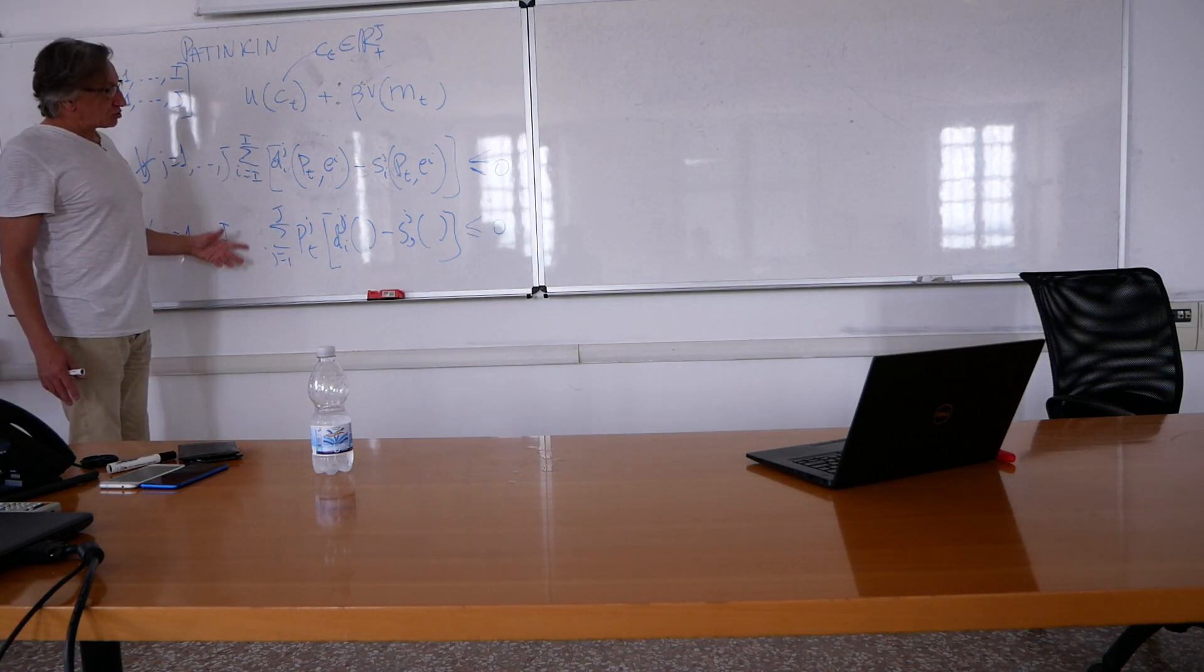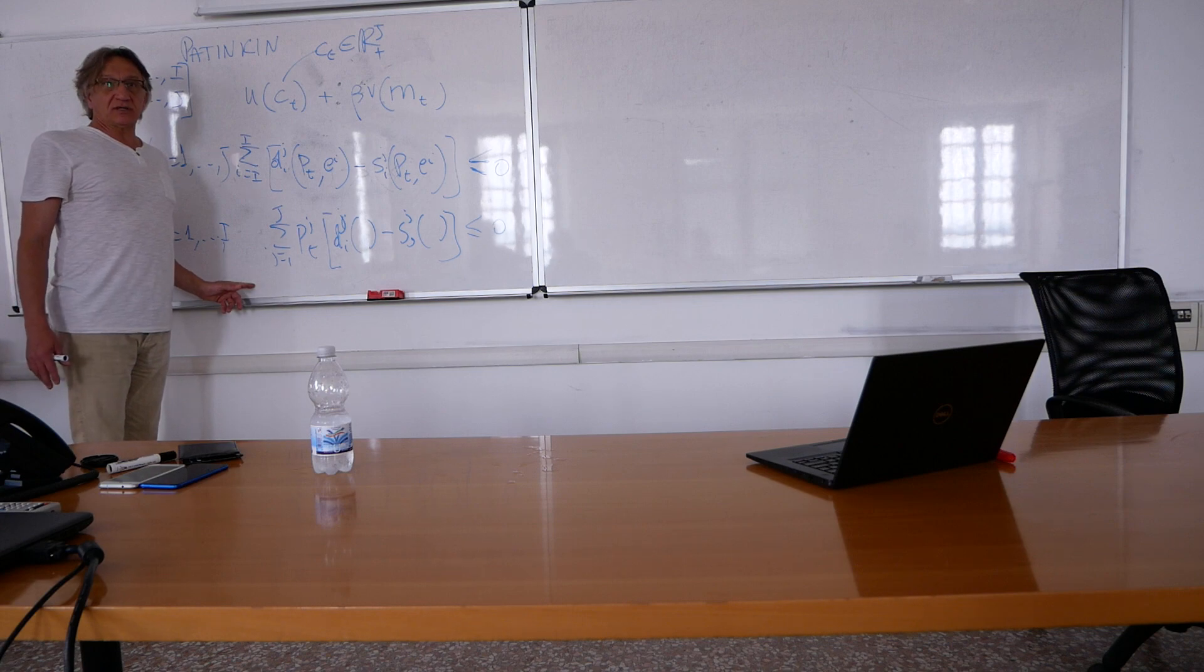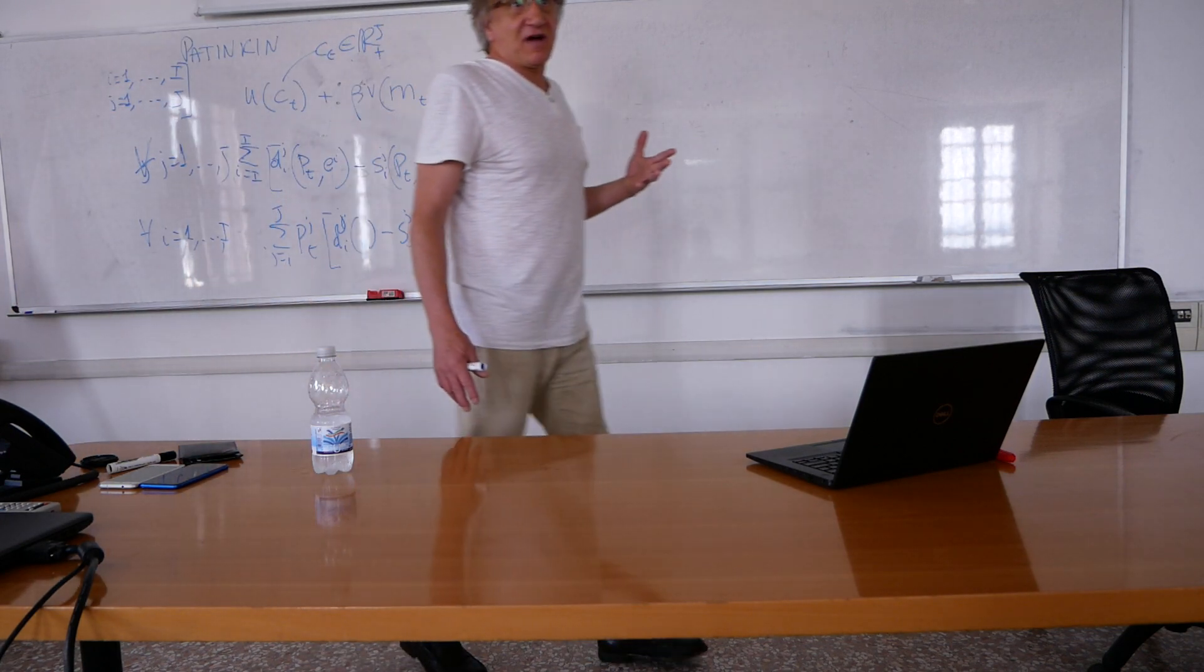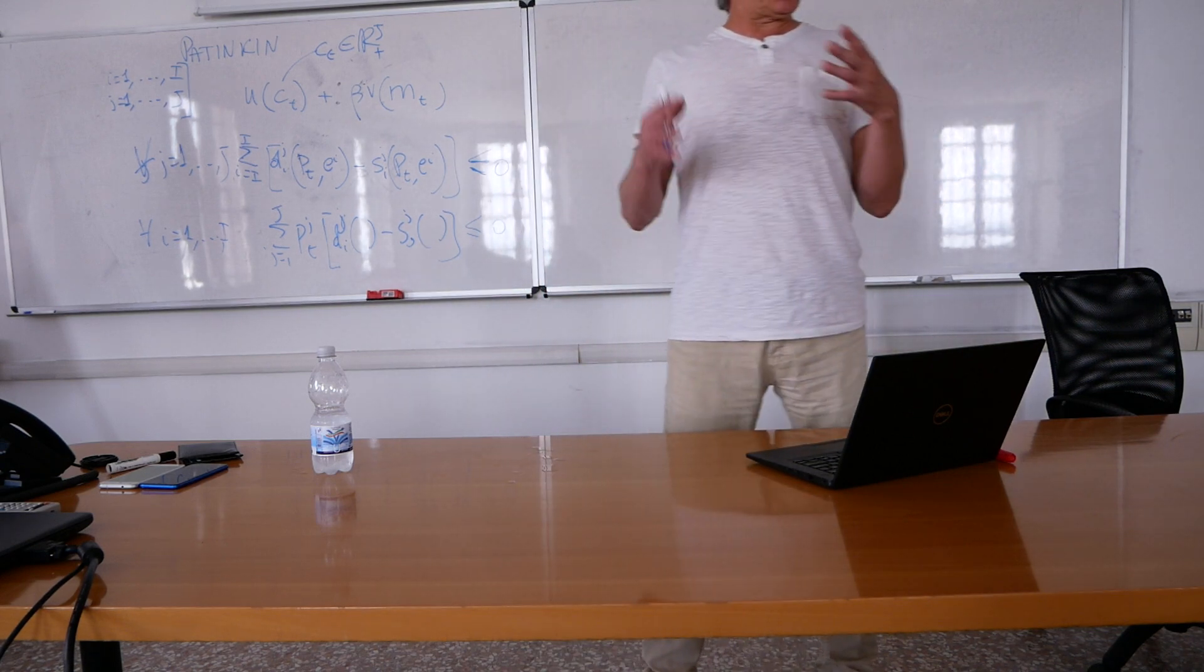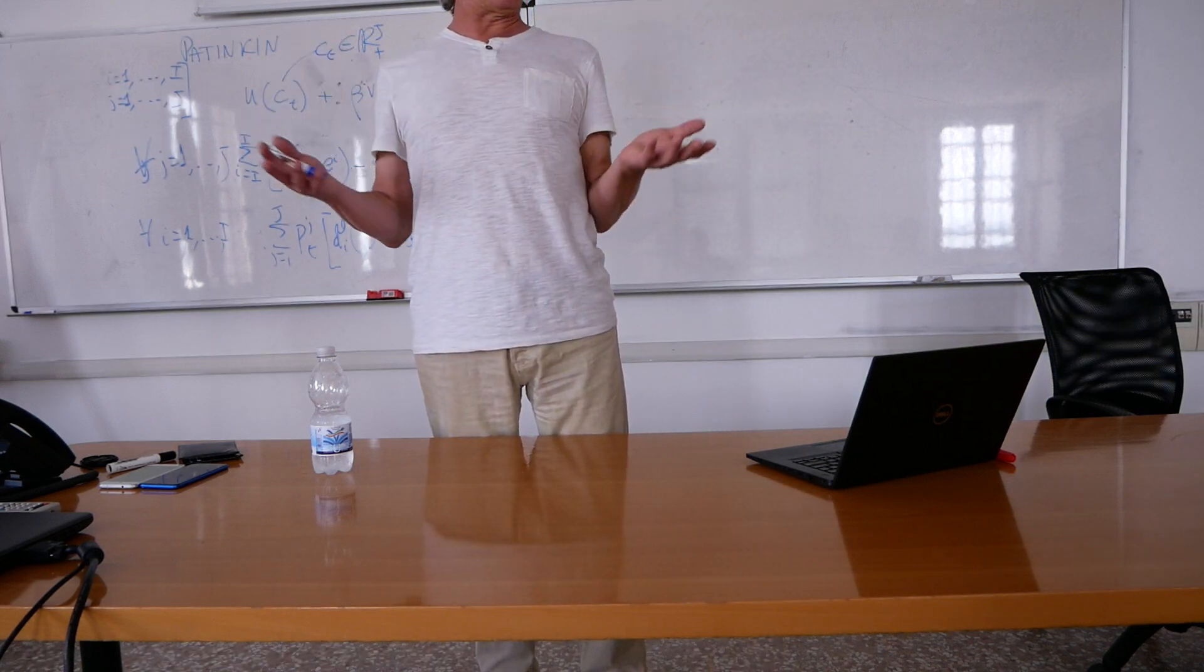Instead of writing their budget constraint and excess demand function like that, I change the budget constraints. I don't change the excess demand function because the excess demand function for each good remains the same. The total demand for bananas has to be less than or equal to the total supply of bananas.